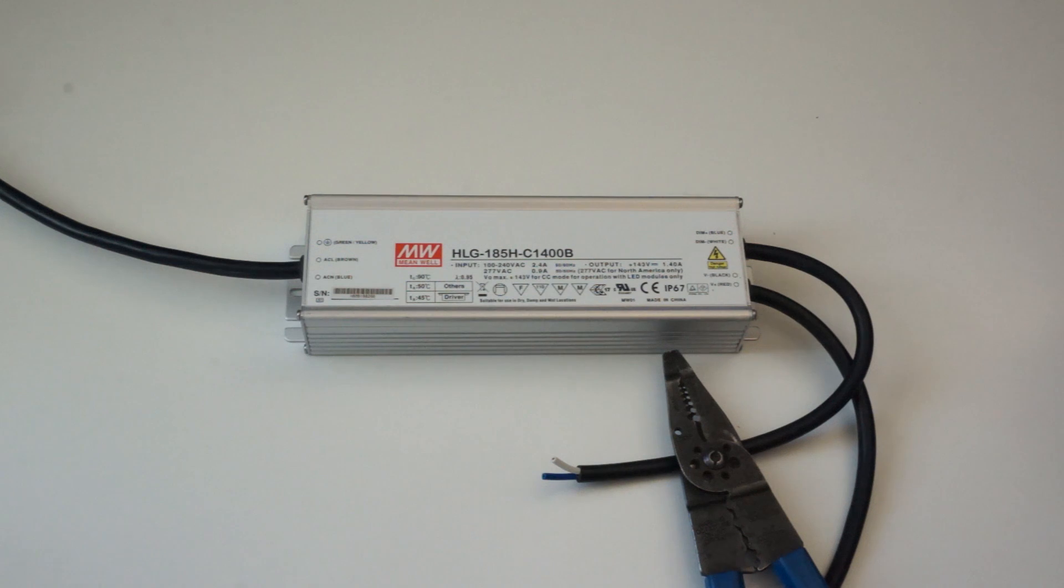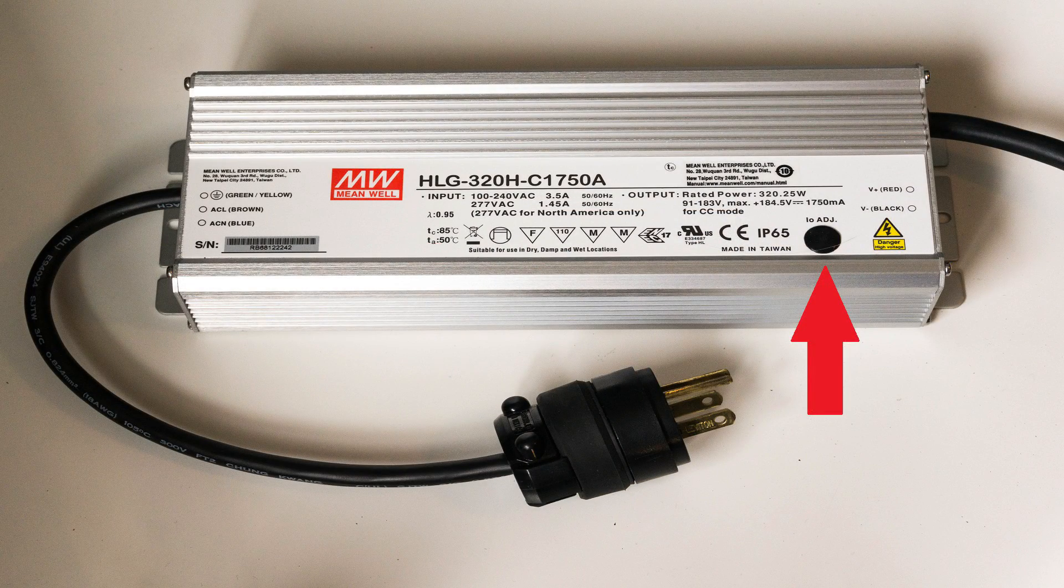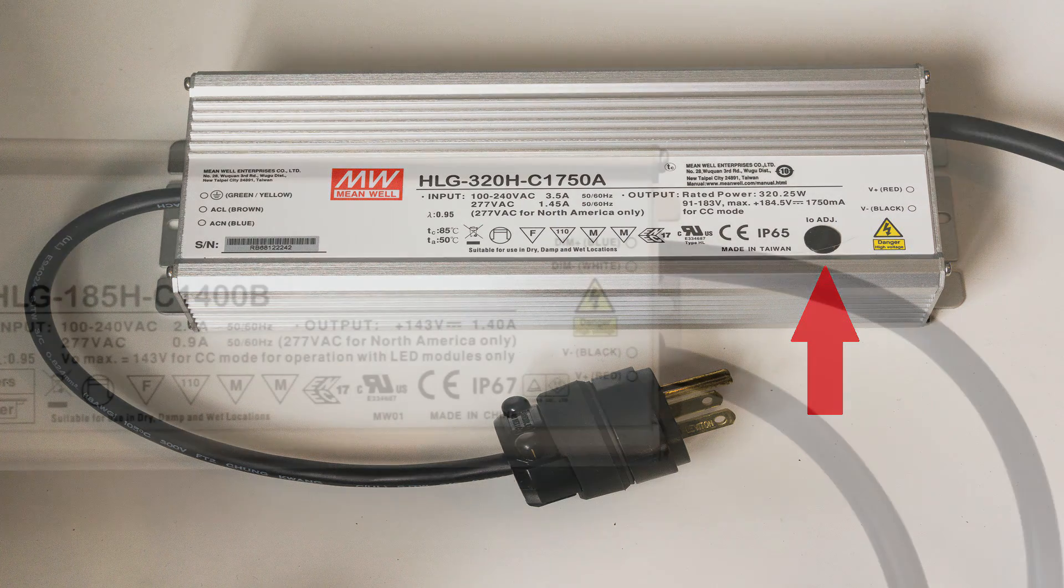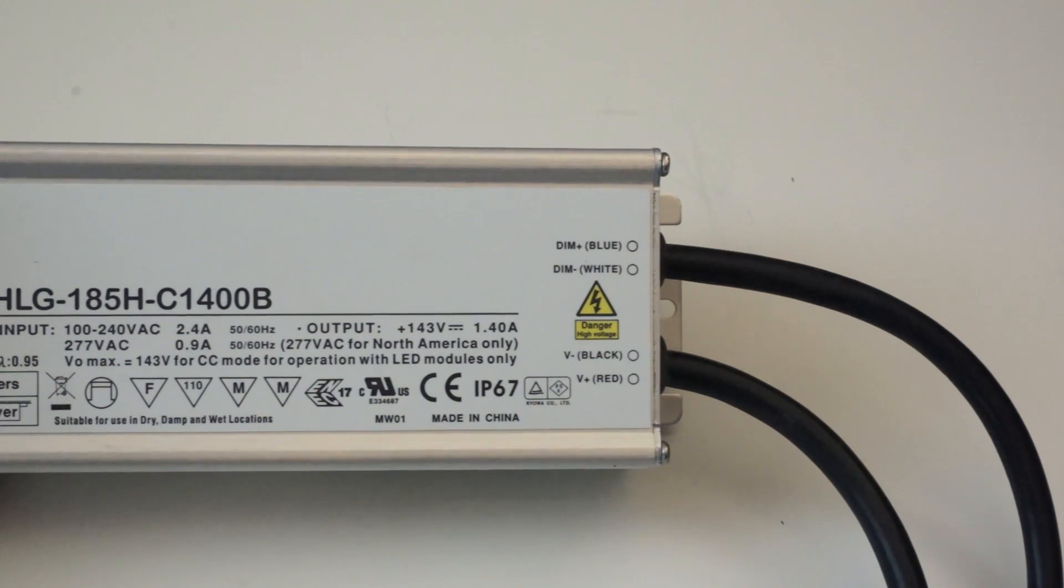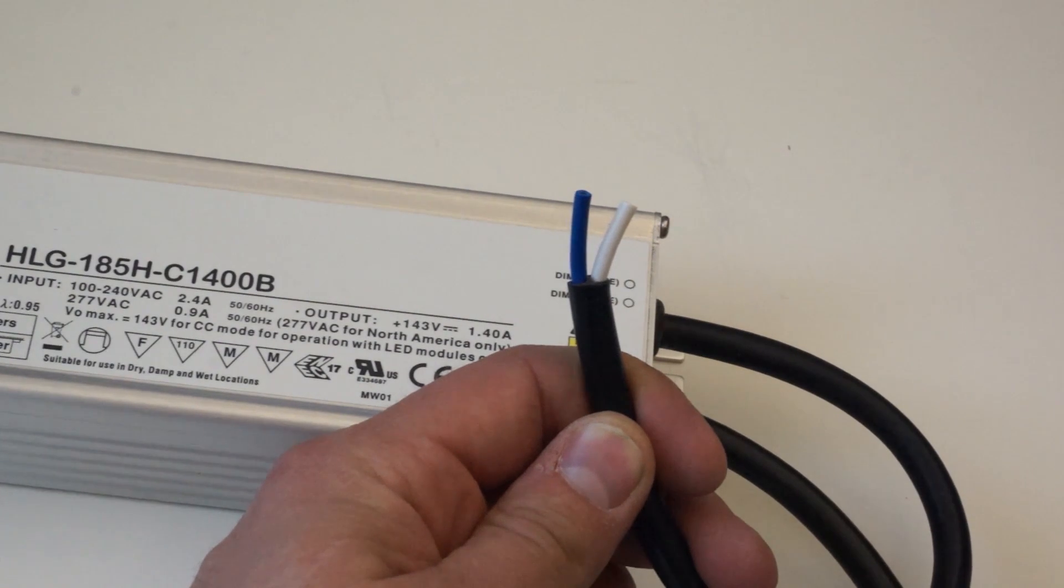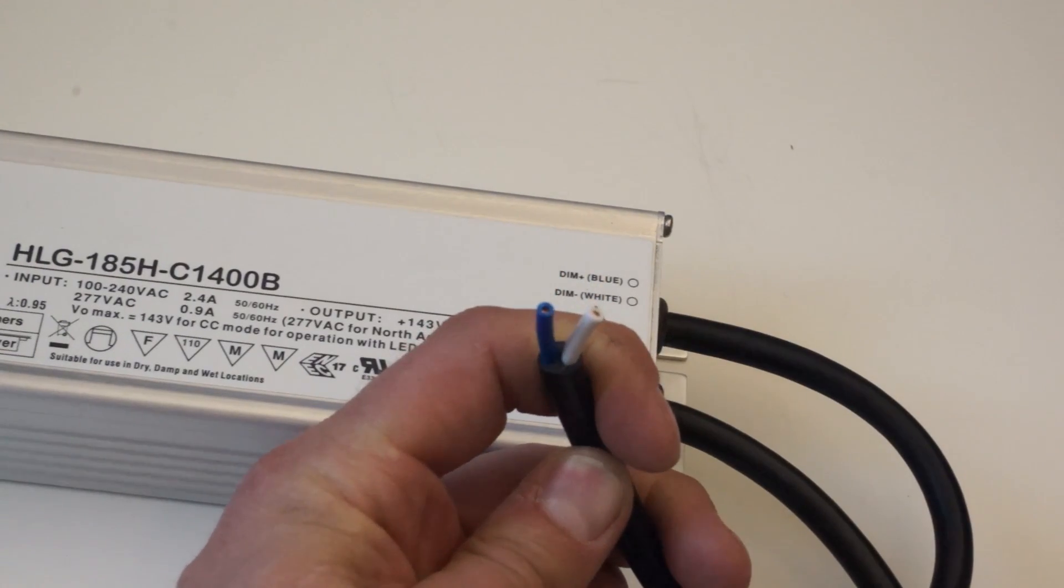On the A type you get just a built-in potentiometer called IO adjust and you just turn that to dim using a screwdriver. On the B type you get the dim plus and dim minus, the blue and white conductors that come out. That's what you attach your potentiometer to, or your pulse width modulation or voltage. There are three ways to do it, but using a pot is definitely the easiest.